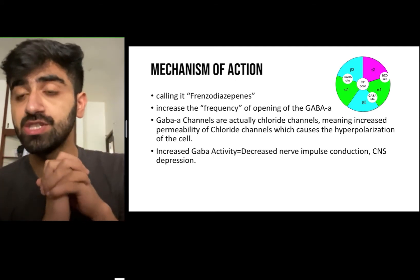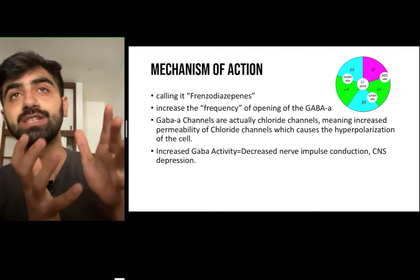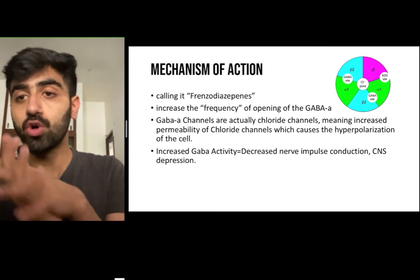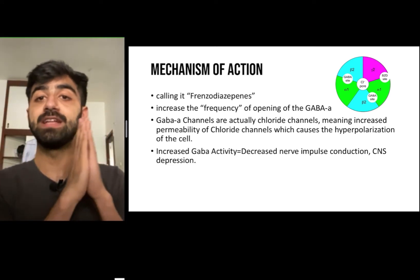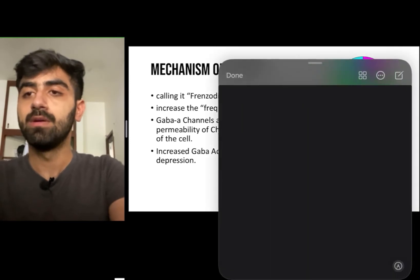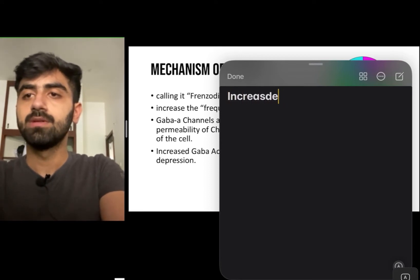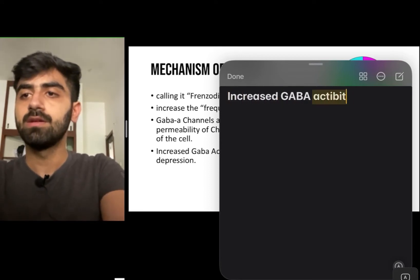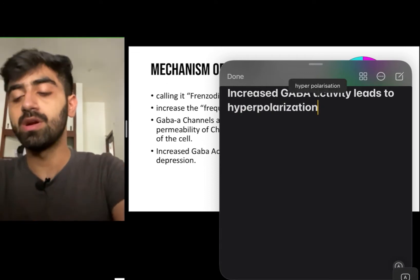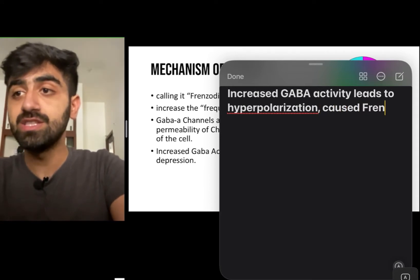Why are we concerned about the hyperpolarization of a neuron? Because if we are hyperpolarizing a neuron, the conduction potential required to conduct an action potential through this neuron is actually increased, or becomes almost impossible. So basically, increased GABA activity means increased chloride ions moving inwards, which leads to hyperpolarization. This increased GABA activity is caused by frenzodiazepines.